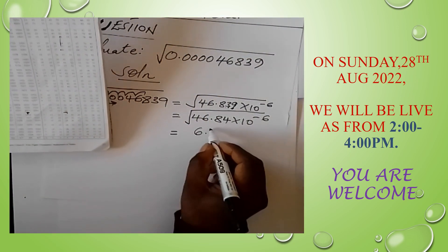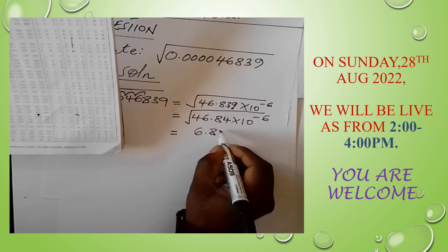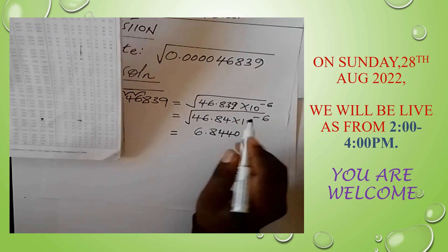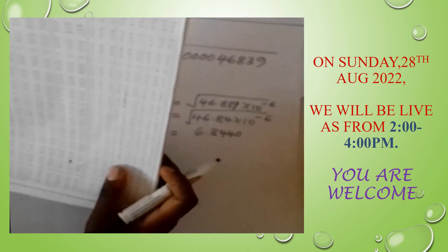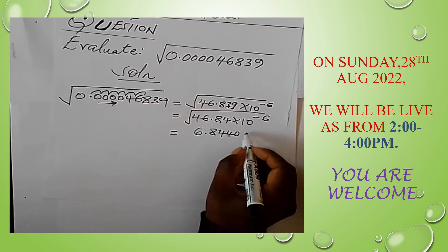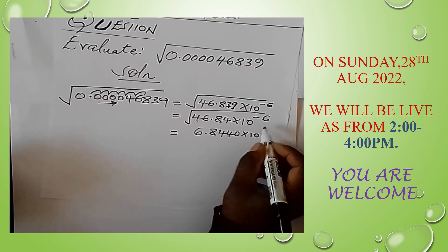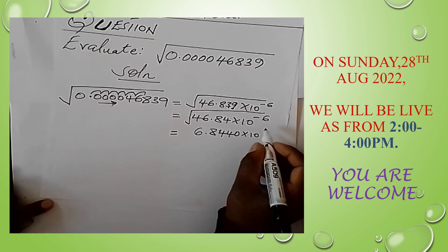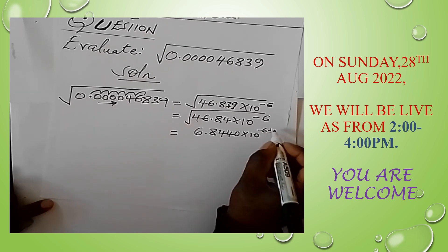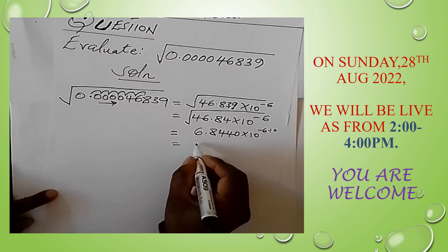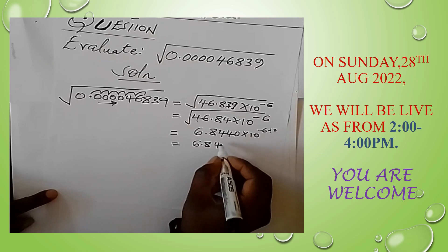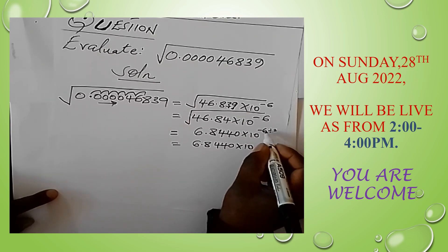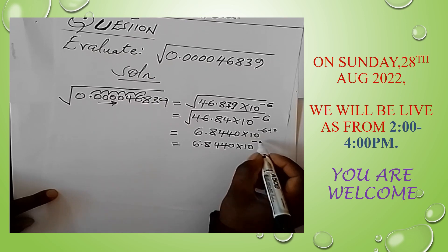So from our tables the square root of 46.84 is 6.8440. Now we apply this to our standard form expression: 6.8440 times 10 to the power of minus 6. The power must be divided by 2, giving minus 6 divided by 2 equals minus 3. So we have 6.8440 times 10 to the power minus 3.